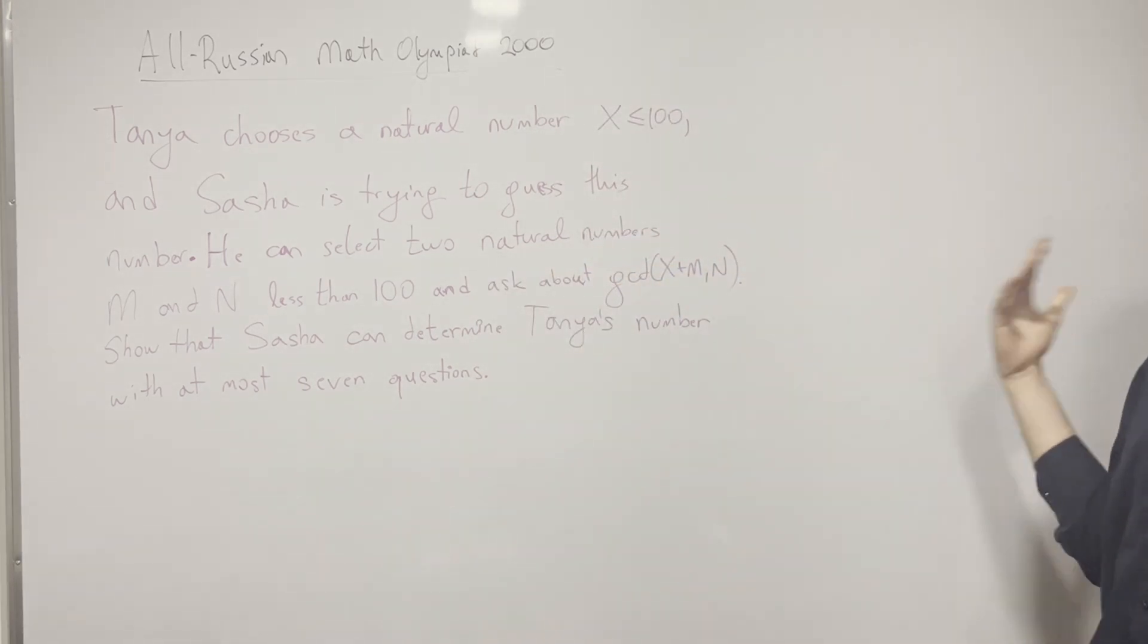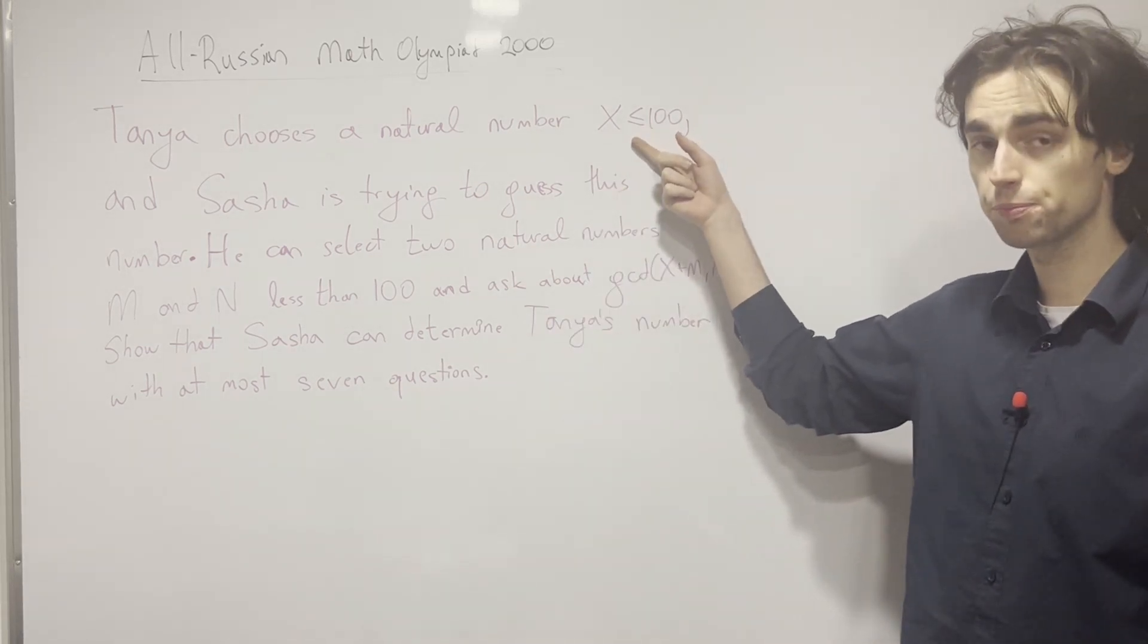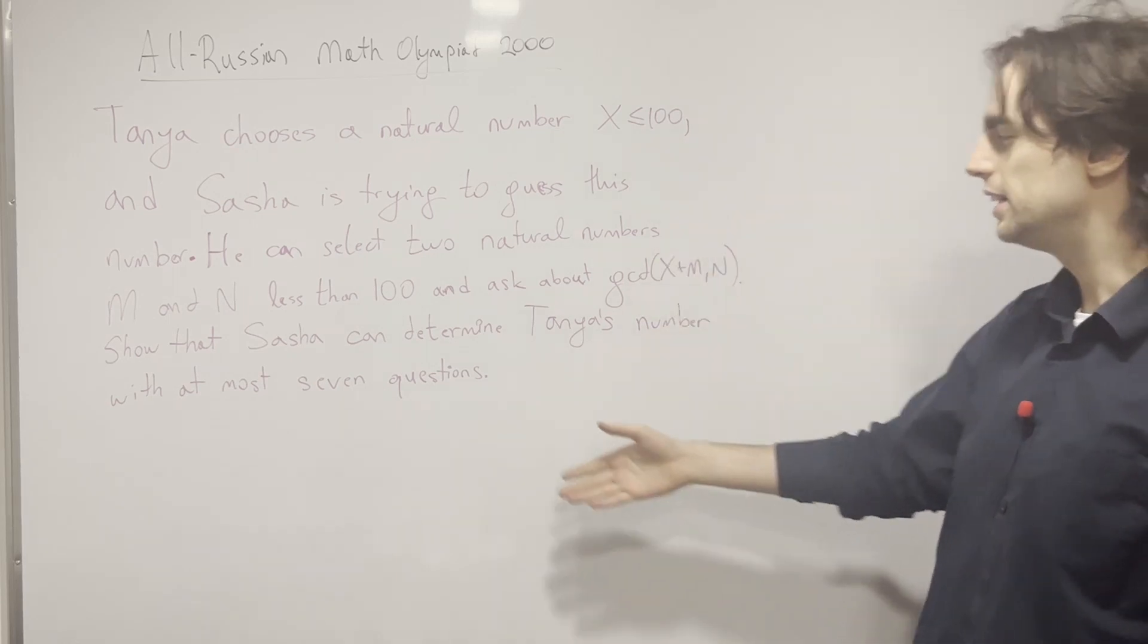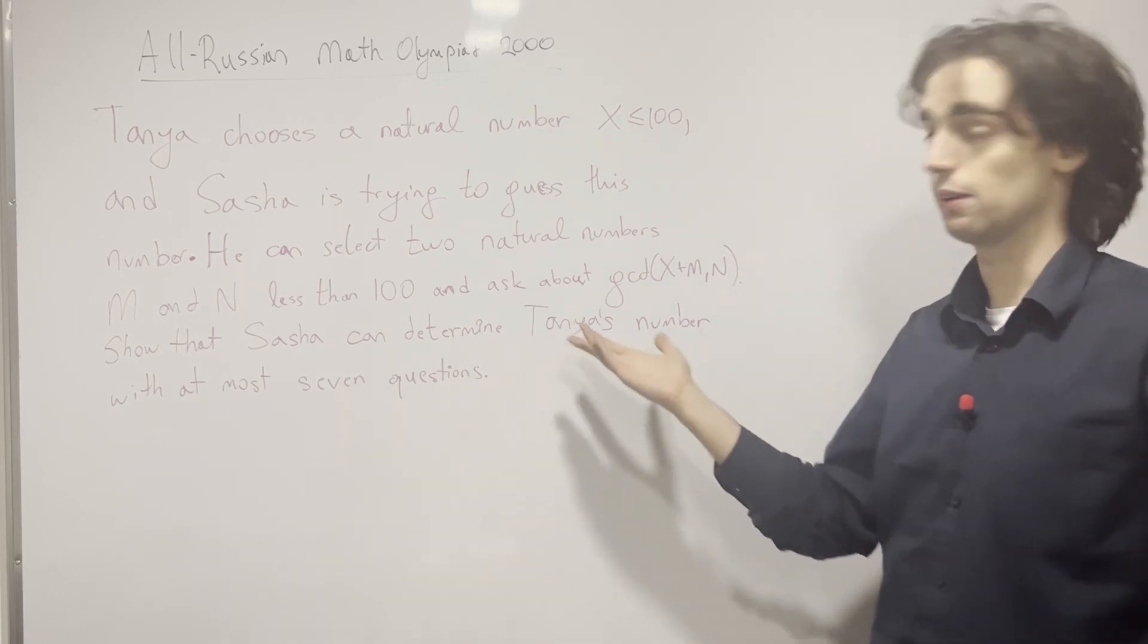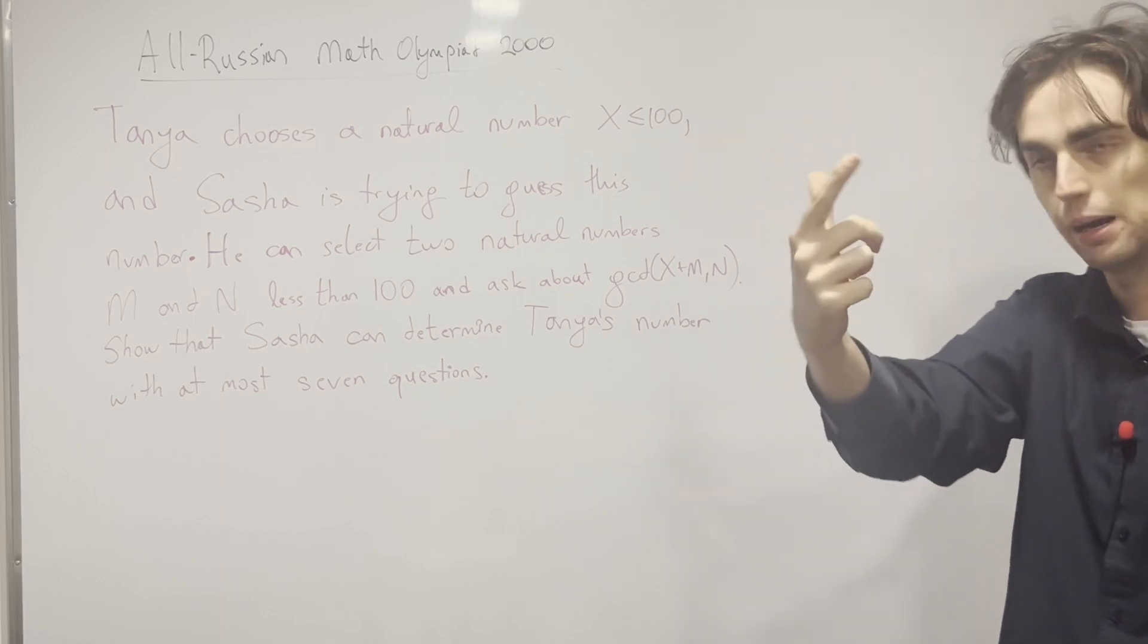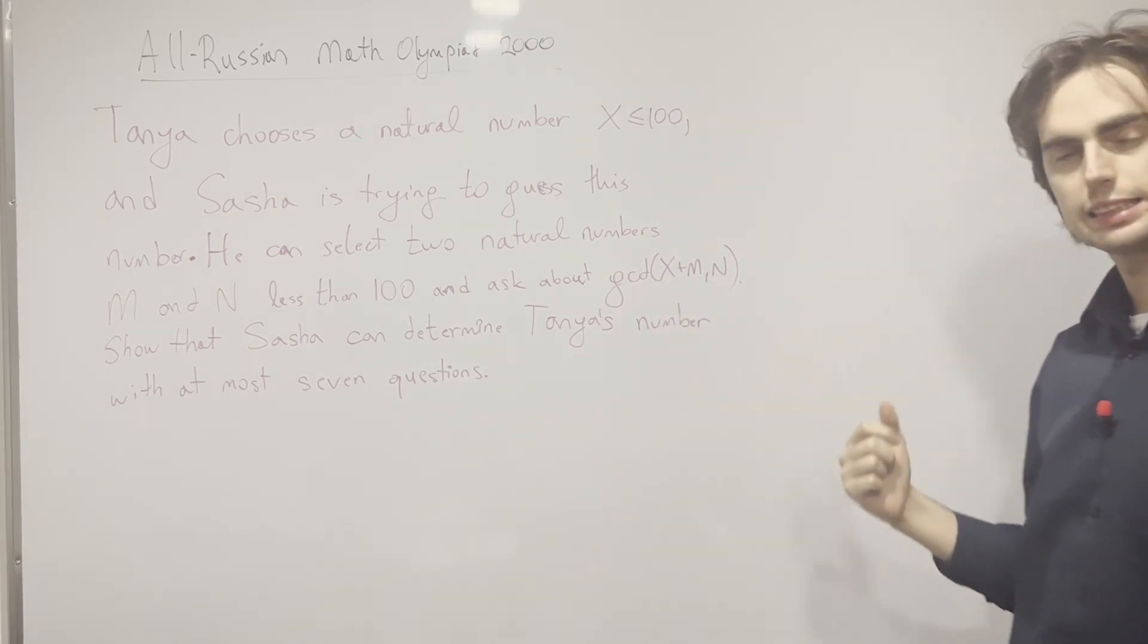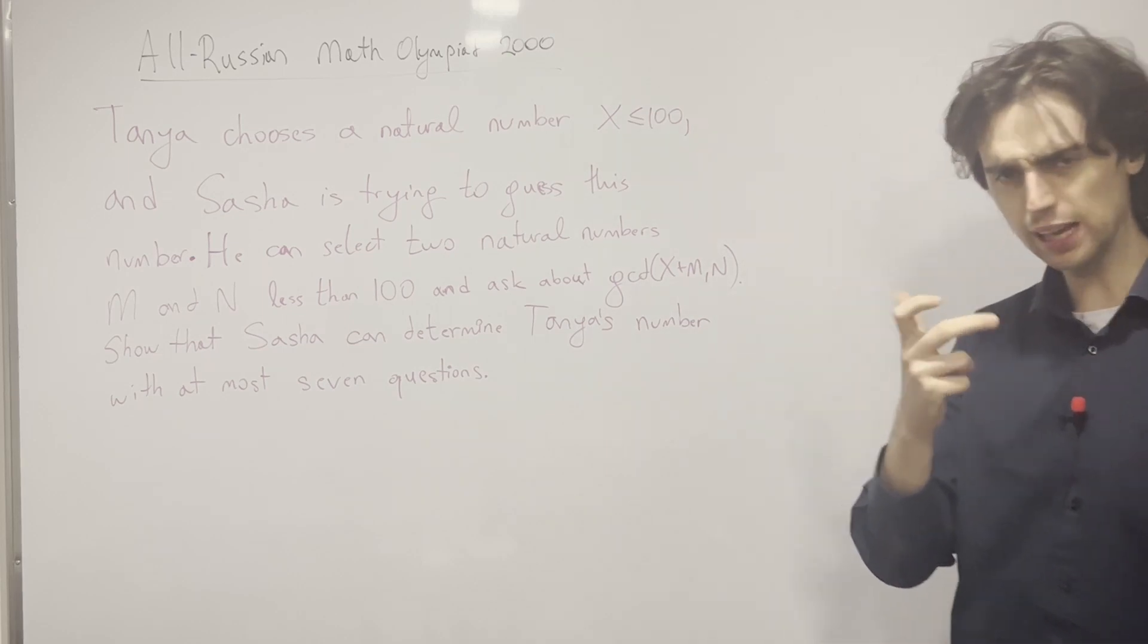One question you may ask yourself is why seven? What is the connection between seven and a hundred? If X is in a much bigger range, you probably need more than seven questions. If it's a million, you probably can't get away with seven questions. So that's one thing we need to think about: what is the connection between seven and a hundred? The second question is, what is the GCD of X plus m and n? How can that give us information?